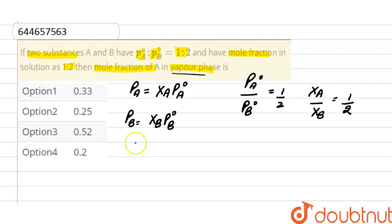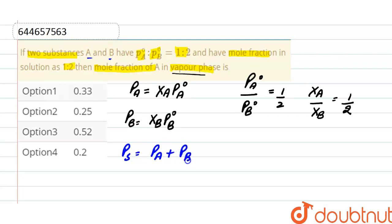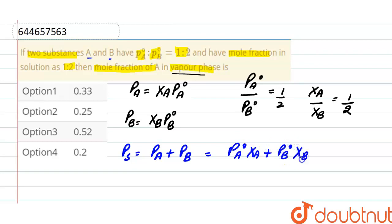According to Raoult's law, total pressure for the two substances A and B in solution equals partial pressure of A plus partial pressure of B, which can be written as PA° × XA + PB° × XB.